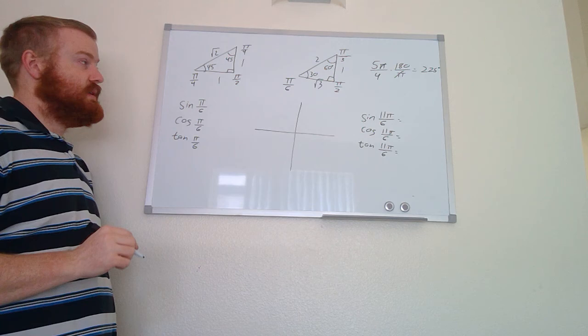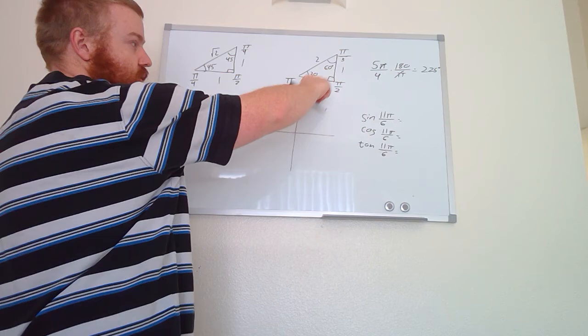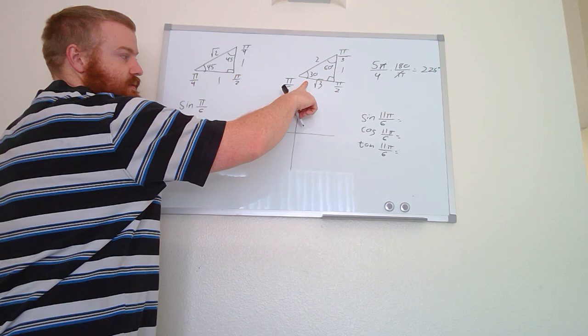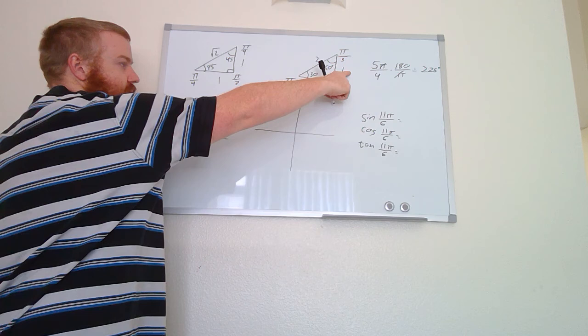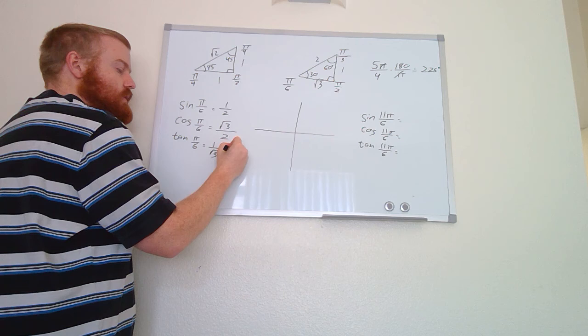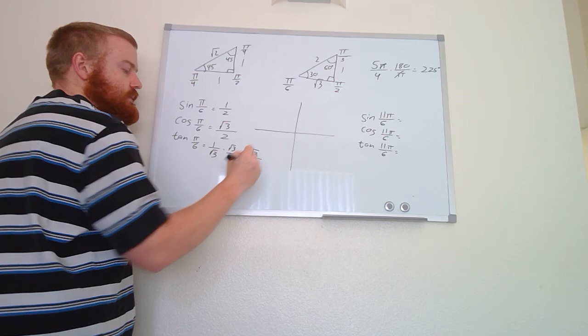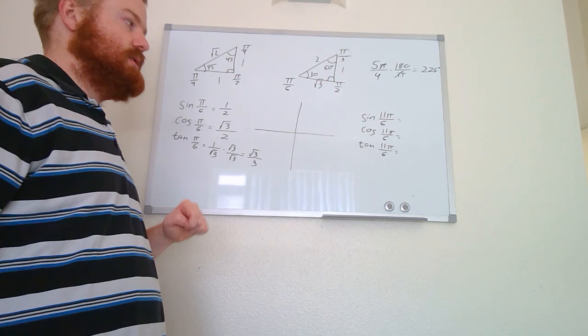Now let's look at π/6, which is 30 degrees. Using the 30-60-90 triangle: sine(π/6) = opposite/hypotenuse = 1/2; cosine(π/6) = adjacent/hypotenuse = √3/2; tangent(π/6) = opposite/adjacent = 1/√3, which rationalizes to √3/3.